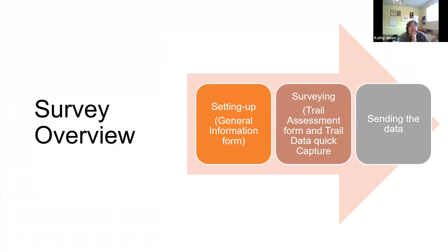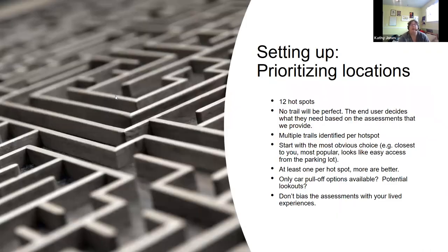For the survey overview today, we're going to discuss setting up, the trail assessment, Quick Capture, and sending in the data. We have 12 hotspots chosen as priority locations — we know there are trails on them and they're on the maps. No trail will be perfect, but our goal is to provide data so the end user can decide if they want to try that trail or not.